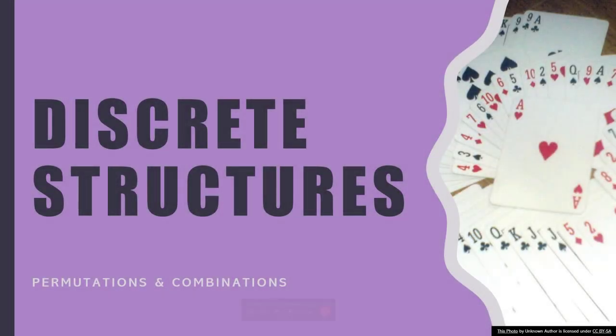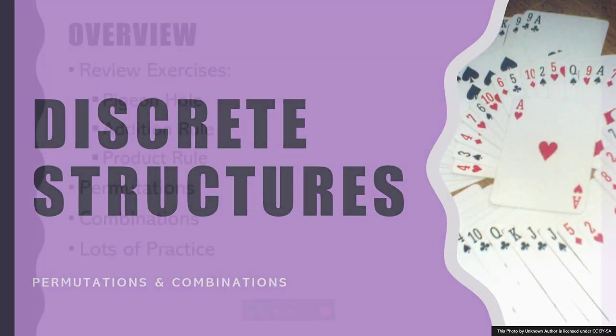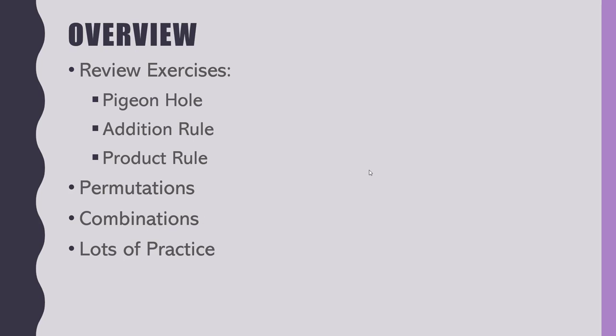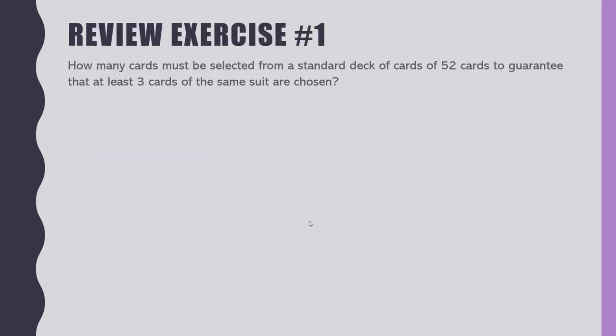We're going to do a few exercises to review the three ideas we talked about the other day. Then we're going to dive into permutations and combinations, and we're going to have tons of practice today. So let's quickly walk through a couple of these. The first question: how many cards must be selected from a standard deck of 52 cards to guarantee that at least three cards of the same suit are chosen? We're going to walk through this as a group. First thing, what kind of problem is this? It is a pigeonhole problem.